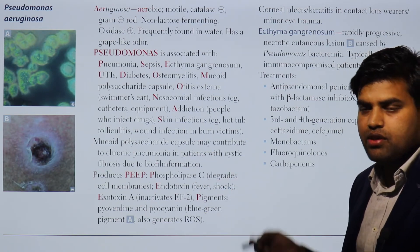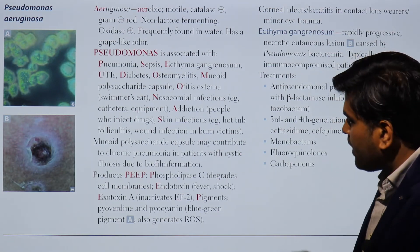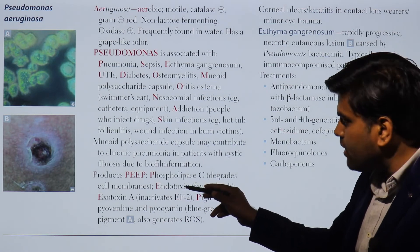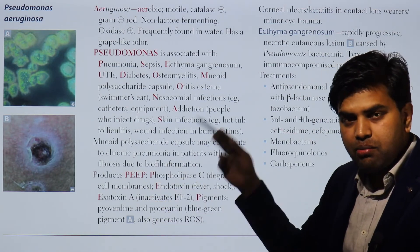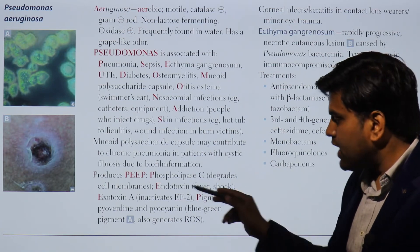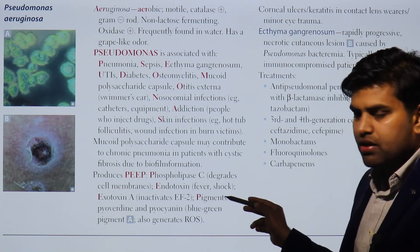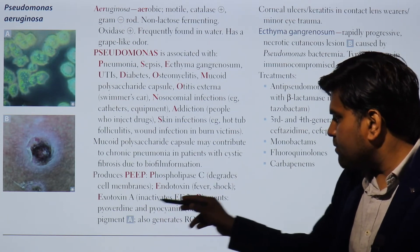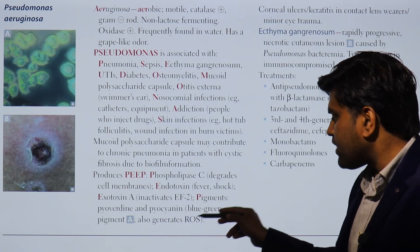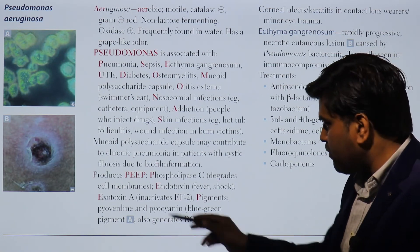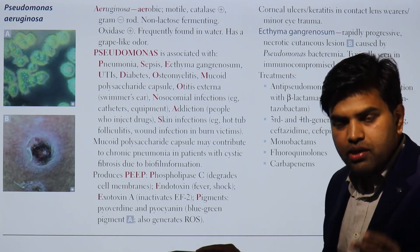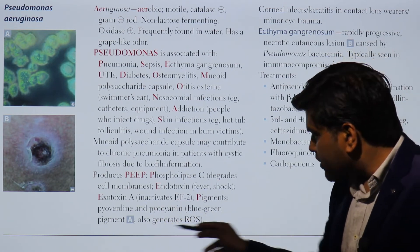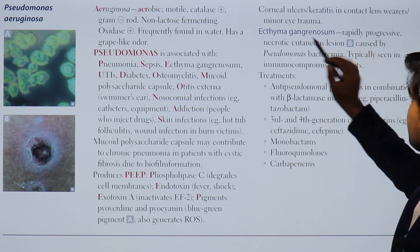Pseudomonas is very difficult to treat in cystic fibrosis patients. It produces phospholipase C that degrades the cell membrane. Being gram-negative, it produces endotoxins causing endotoxic shock. It produces exotoxin A, which inhibits protein synthesis by inhibiting elongation factor 2 — similar to diphtheria toxin. The four pigments produced are: pyoverdin (green), pyocyanin (blue), pyorubin (red), and pyomelanin (black). Pyoverdin and pyocyanin act as virulence factors because they generate reactive oxygen species.